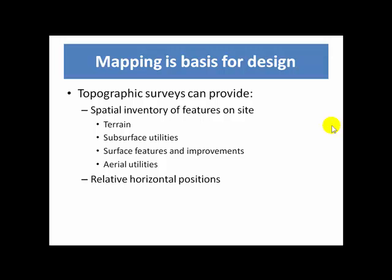Our topographic survey is also going to provide relative horizontal positions — relative to other features on the site or to some horizontal datum — so that we can measure between objects on the survey as a representation of physical conditions in the field. Just as we have relative horizontal positions, we have elevation differences. This tells us a great deal about the way drainage will go, as well as considerations of slope for safe pavement slopes, ADA access, and earthwork slopes making the site cost-effective and safe.